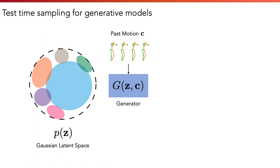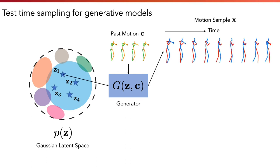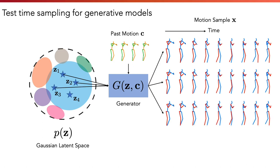To understand why generative models fail to produce diverse samples, we need to look at how generative models typically produce samples at test time. They first draw latent codes randomly and independently from the latent prior, based only on likelihood, and then decode the latent codes into motion samples.